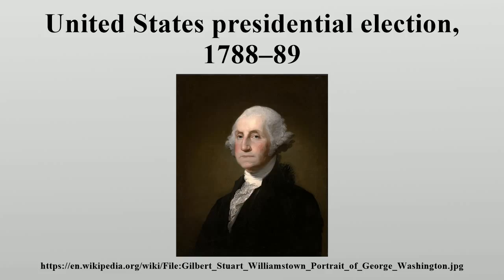Only six of the ten states casting electoral votes chose electors by any form of popular vote. Less than 1.3% of the population voted. The 1790 census would count a total population of 3.0 million, with a free population of 2.4 million and 600,000 slaves in those states casting electoral votes in this election. Those states that did choose electors by popular vote had widely varying restrictions on suffrage via property requirements.